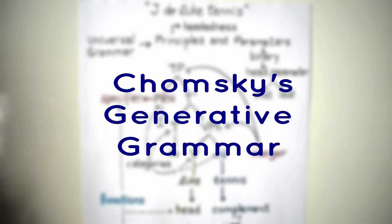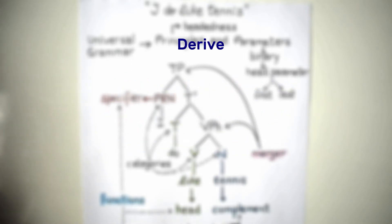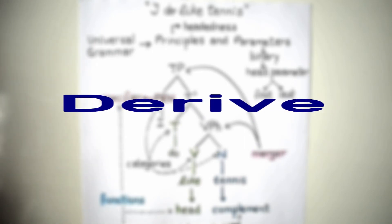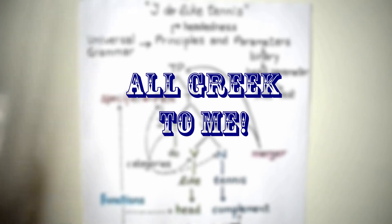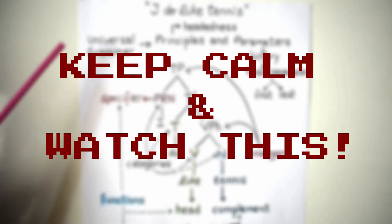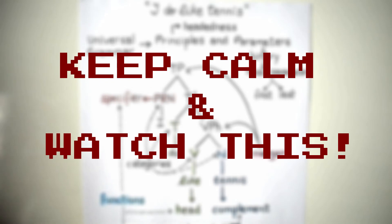Hi there. Here's our first class on Chomsky's generative grammar. The first thing I'd like to say is that we will be deriving — that's the first technical term: derive, derivation — we will derive a very short sentence: 'I do like tennis.' If you're not familiar with Chomsky's approach to sentence analysis, you will initially feel that this is all Greek to you. The idea of starting with sentence analysis right away is for you to see how sentences are derived or analyzed, and then we will create a state of 'what is this?' — so there will be a lot of questions that will then be answered, little by little.